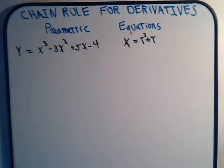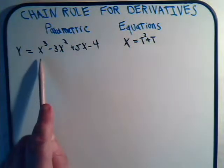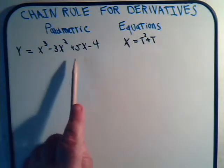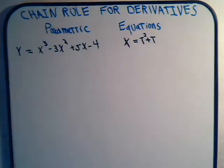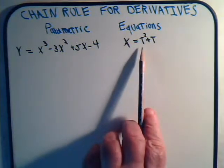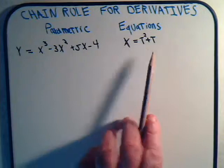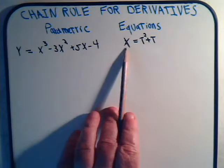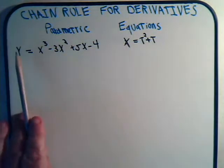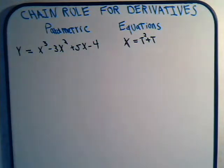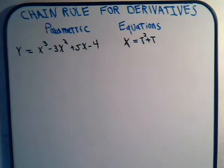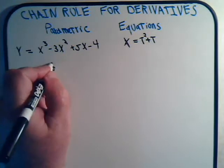In this problem it's a little bit different because here we're saying y is equal to x cubed minus 3x squared plus 5x minus 4, and x equals t squared plus t. So here x is expressed as a function of t, but y isn't — y is expressed as a function of x. What we're going to do in this video is determine dy/dt.